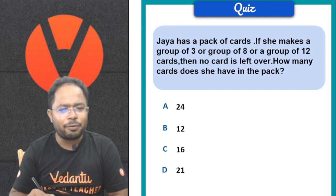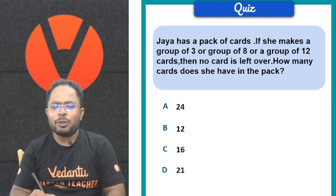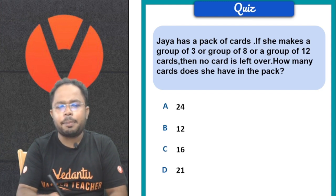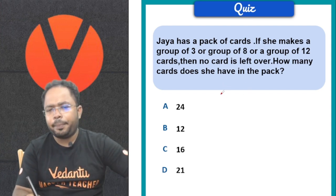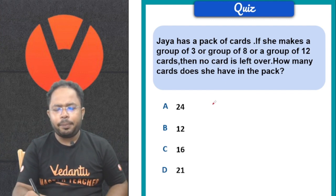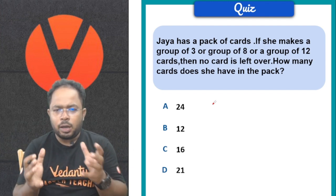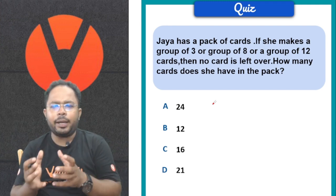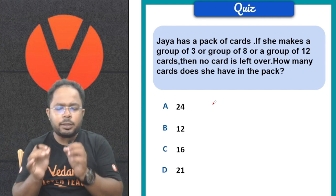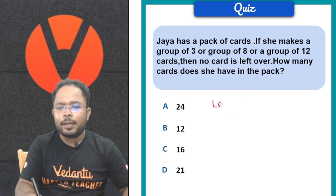Umeed karta hoon sabhi ne question solve kar liya hoga. Aur jaldi se uska answer comment box pe bhi daal do. So let's discuss. Jaya has a pack of cards — we need to make groups of 3, 8, or 12 with no card left over. Since we need a number divisible by all three, we should go with LCM. We need to find a set that works for all three so that no card is left when dividing. So in this case we should go with LCM.